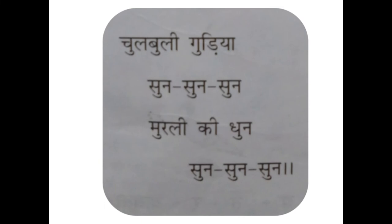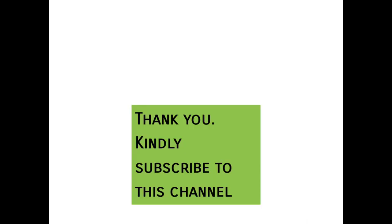The third stanza is 'Chulbuli gudiyan sun sun sun sun, murli ke dun sun sun sun' — 'gudiyan' means doll, so it's the bubbly doll. The poet is telling the doll to please listen to the melody of the song. This is how the poem ends.